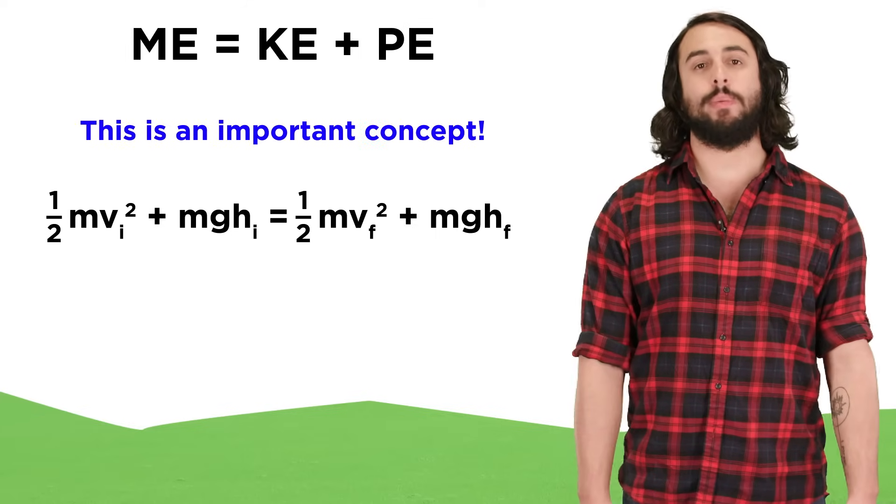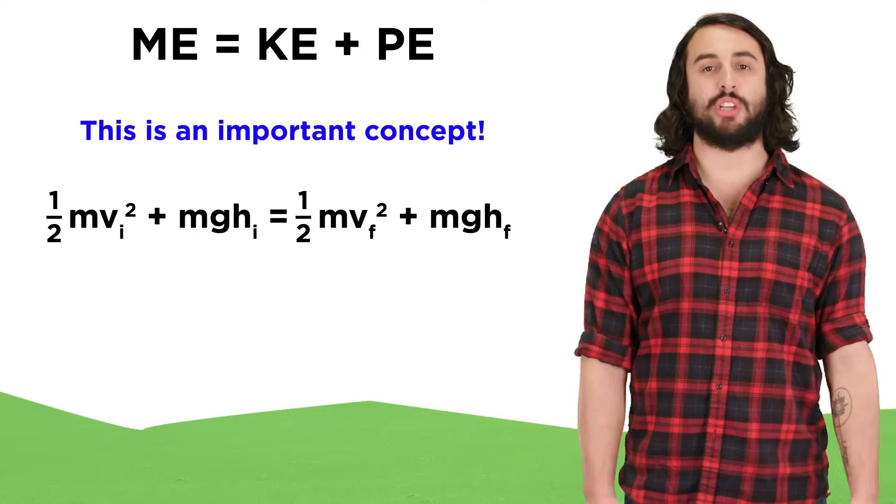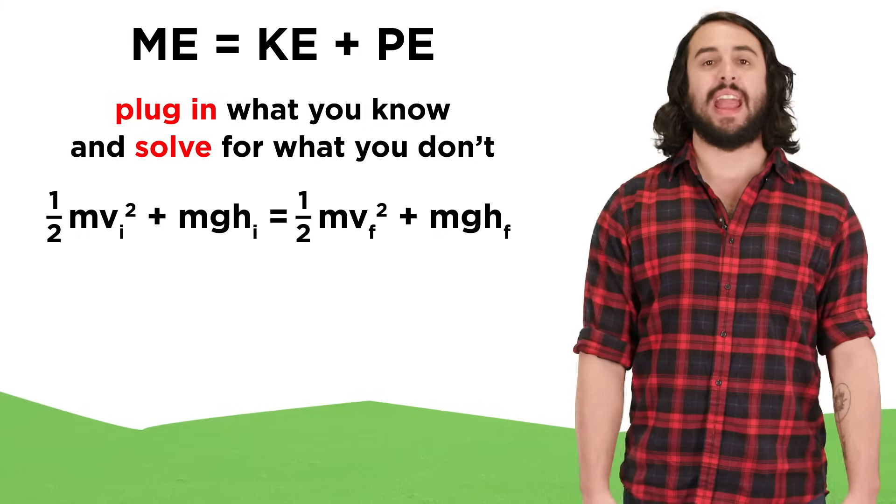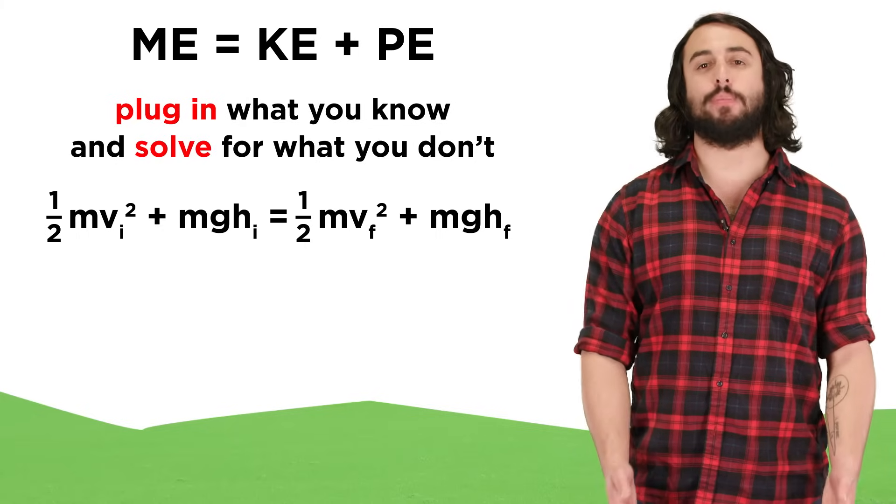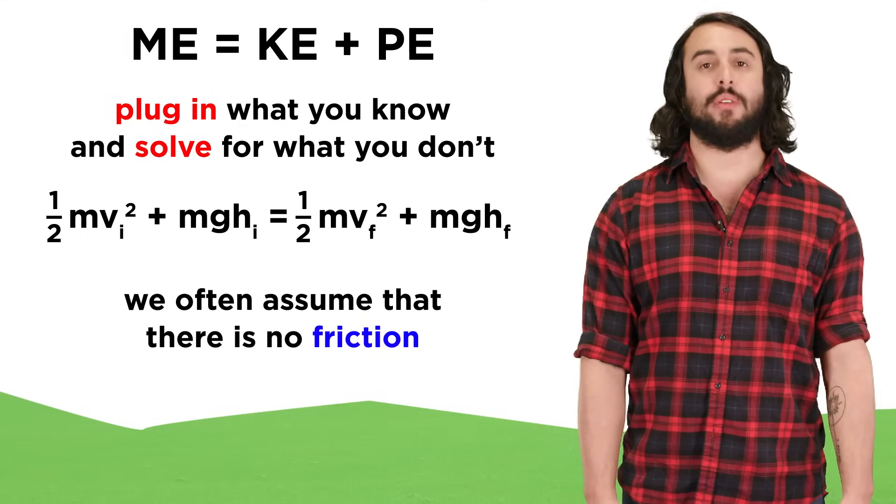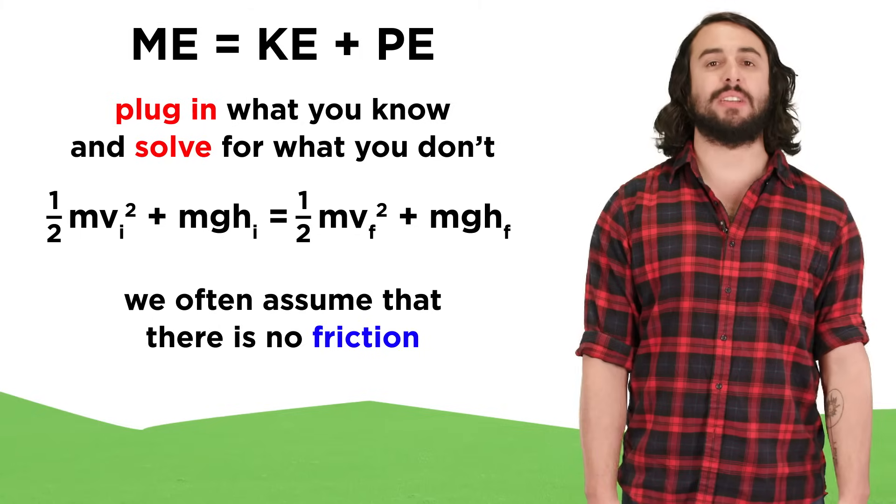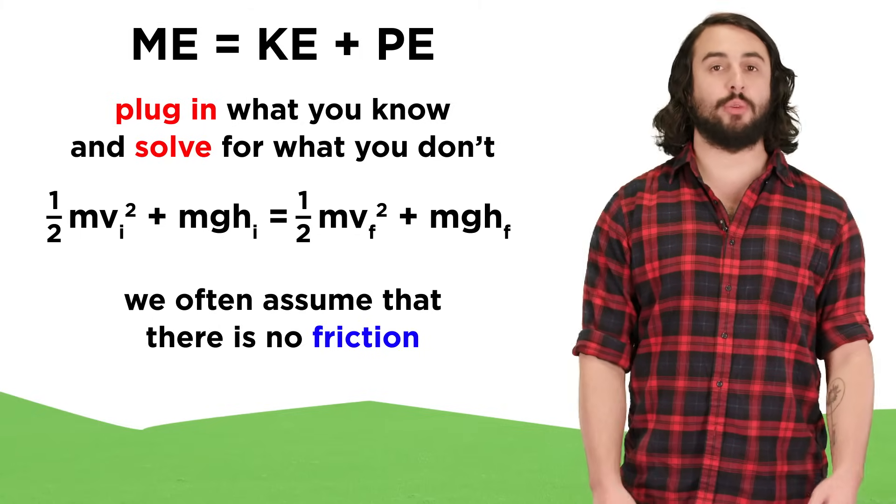This equation will be used frequently in physics when we want to assess the kinetic or potential energy of an object at a particular moment, and if we have enough information about a system, we will be able to algebraically solve for some unknown. This only works when there is no friction present, but for systems like a swinging pendulum, we can use it anyway, as the force of friction will be negligible.